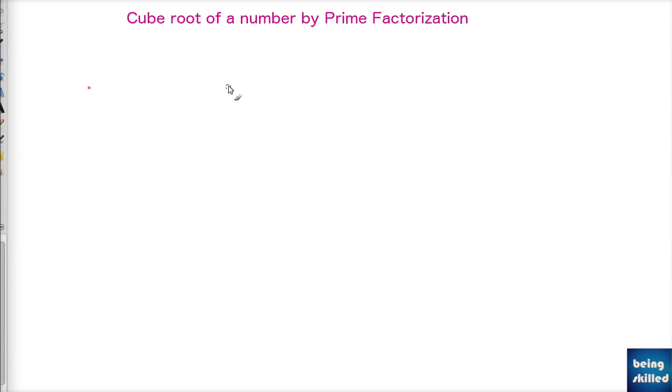In this tutorial we will learn how to calculate cube root of any number by the prime factorization method. First of all, let's have a number. We are taking 125. Now all you have to do is prime factorize it.